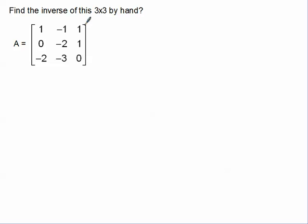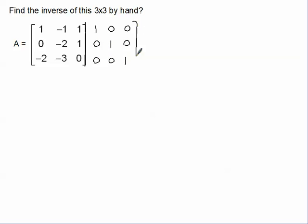What we're going to do is cancel out this bracket and put that line like we would in an augmented matrix, and put the 3 by 3 identity elements over here, making one big long augmented matrix like this.